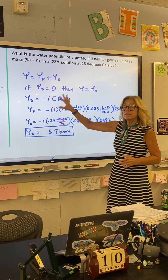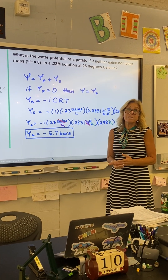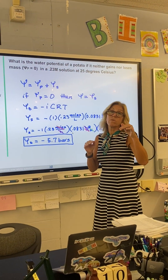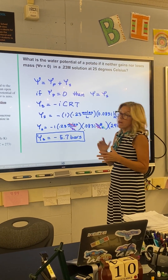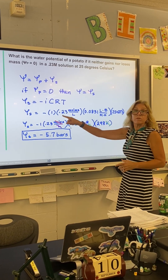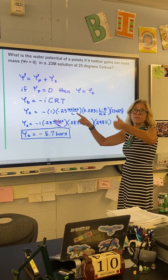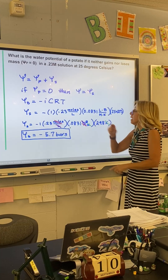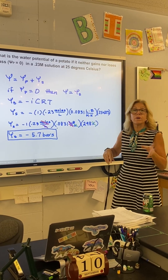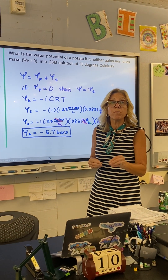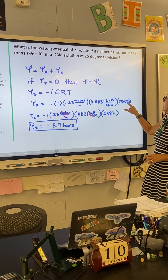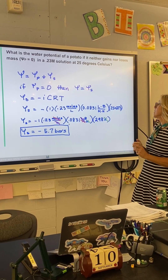The solute potential has an equation: negative iCRT. It's negative because whenever you put solutes into a solution the water potential goes down. 'i' stands for the ionization constant — for sugar it is one because it doesn't ionize; salt would be two. 'C' is that sweet molarity where your potatoes would neither gain nor lose mass, given as moles per liter. 'R' is the constant 0.0831 liters per bar per mole per kelvin, and 'T' is temperature in kelvin, so it's whatever the Celsius temperature is plus 273.